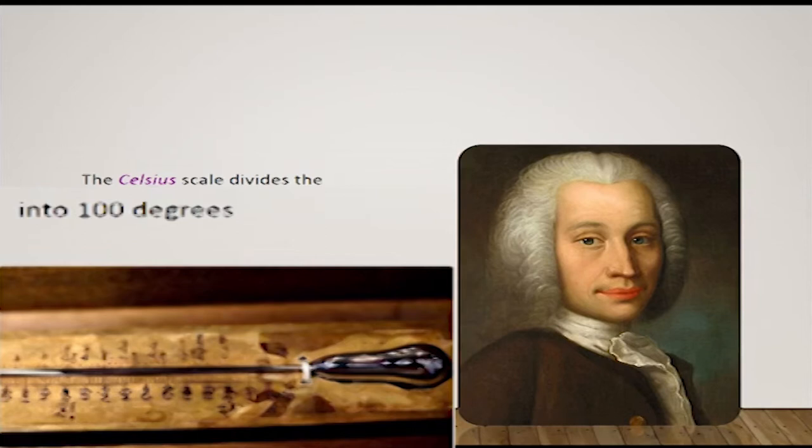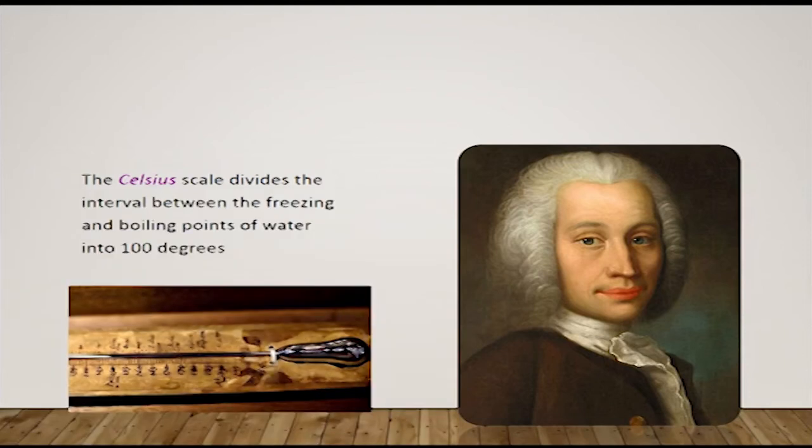One thing you're going to notice is the numbers decrease. That means they're higher on the bottom, close to the bulb, and lower at the top. In the original scale, Celsius made the boil temperature 0 and 100 for the freezing. What happened is there is no negative temperature because there is no temperature higher, based on his experience, than the boil temperature.